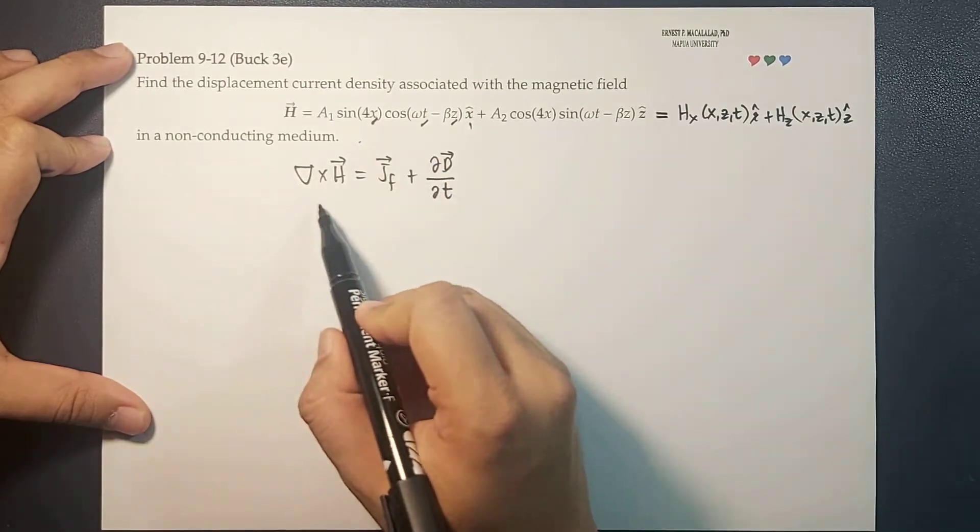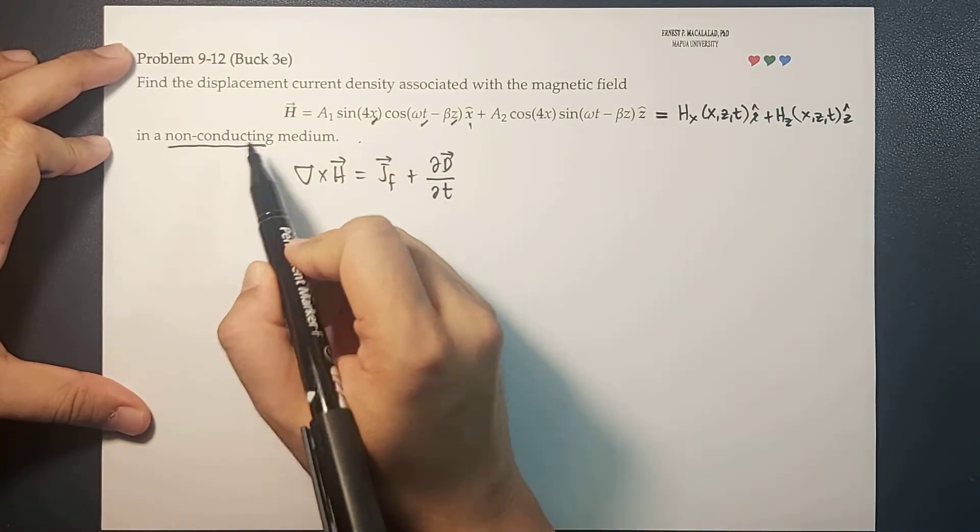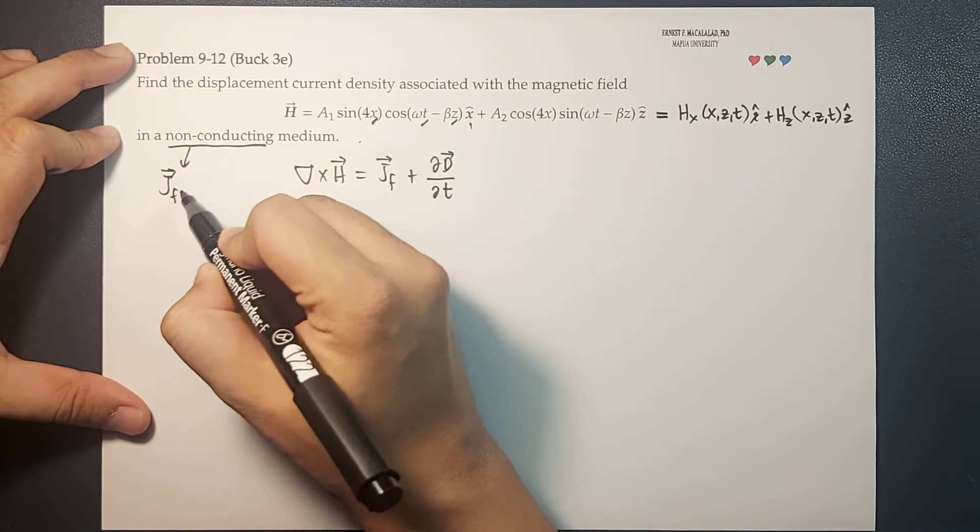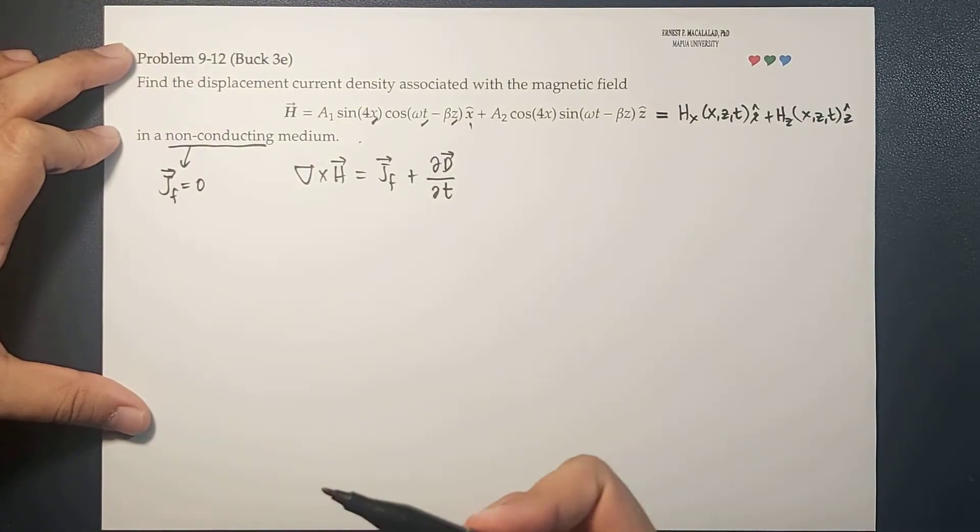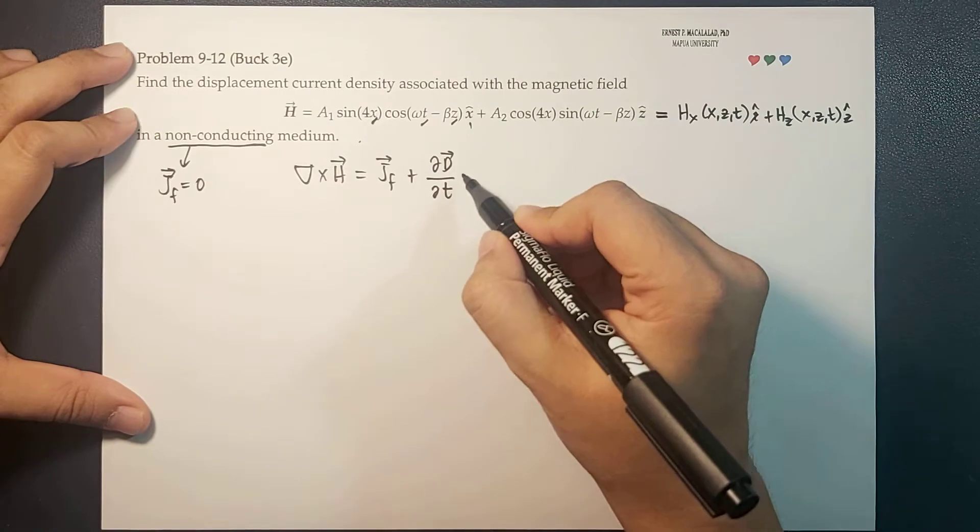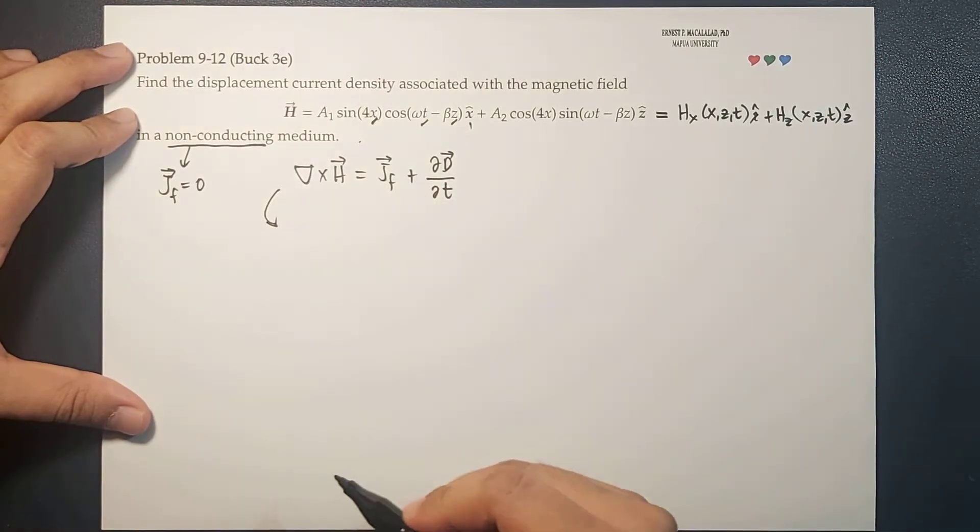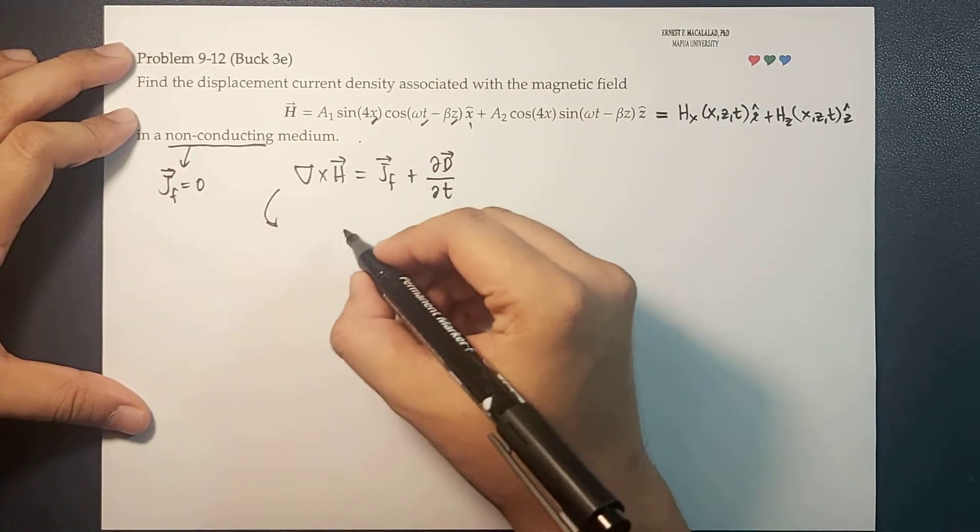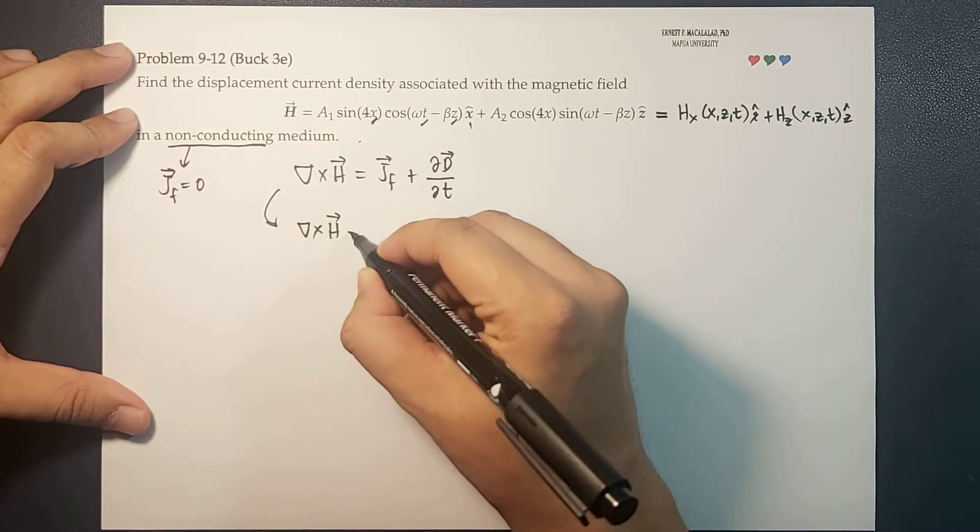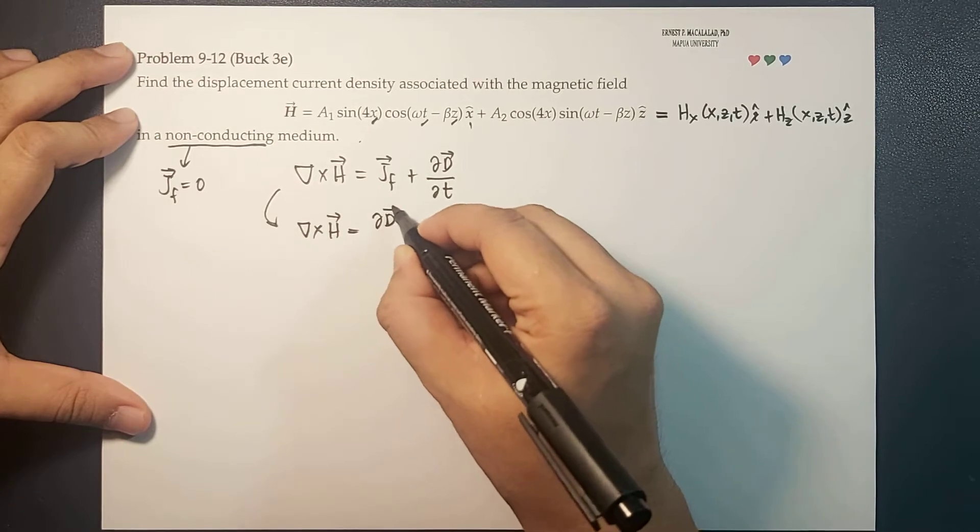medium we're considering is non-conducting, so this means that the free current is zero because there is no conduction in the medium. Therefore, this equation is now reduced to: the curl of H is equal to the derivative of D